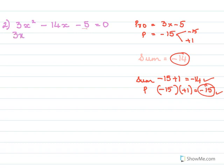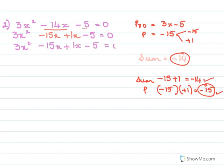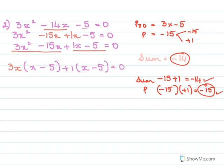So here it is 3x square. For the minus 14x term, we split it into minus 15x plus 1x, then minus 5 equals 0. From the first two terms, I take 3x common out, so what remains is (x minus 5). From the next two terms I take plus 1 common out, so what remains is (x minus 5) equals 0.